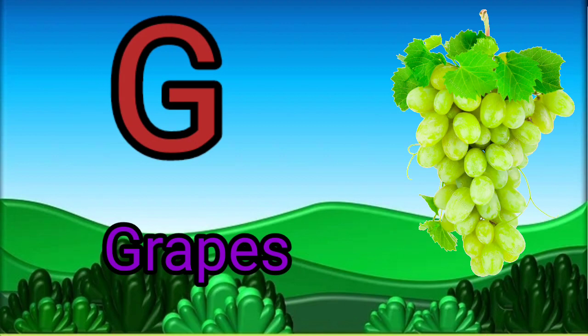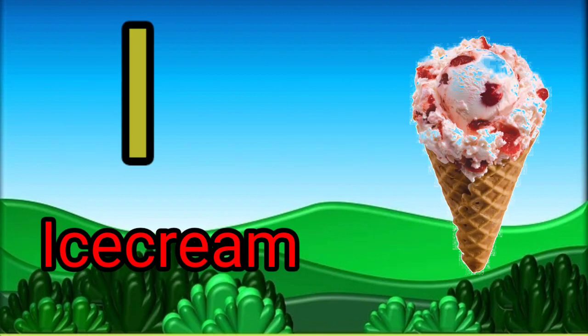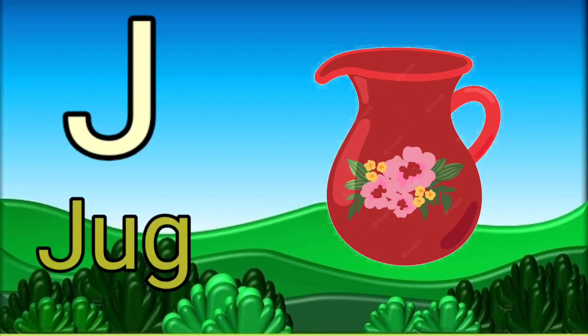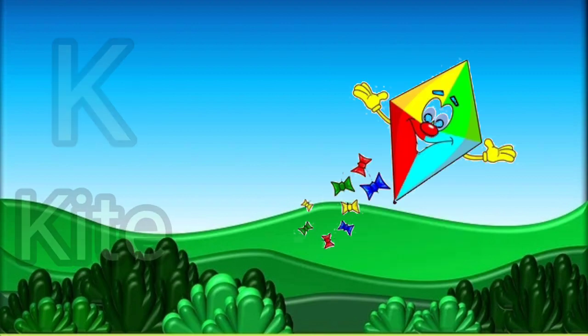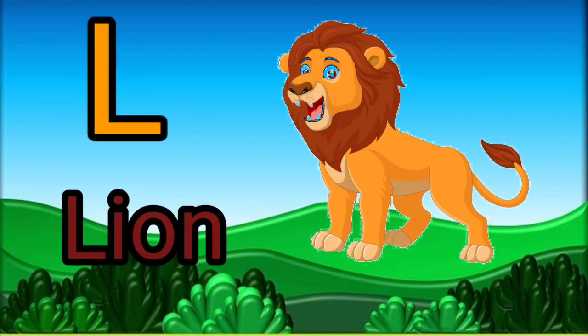G for grapes, H for horse, I for ice cream, J for jug, K for kite, L for lion.